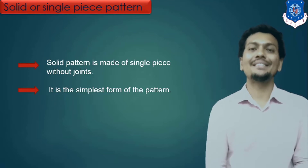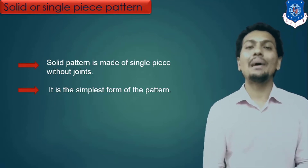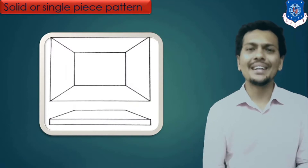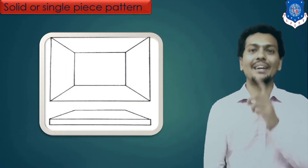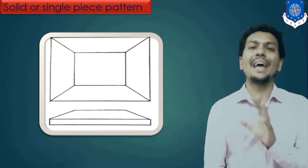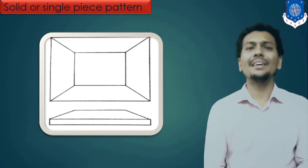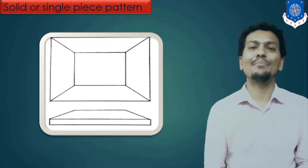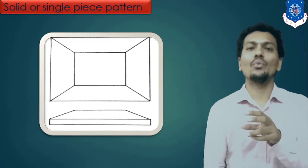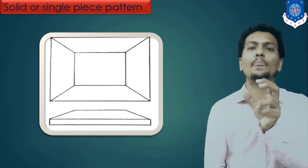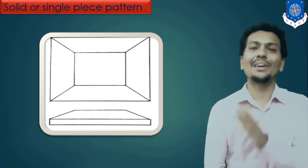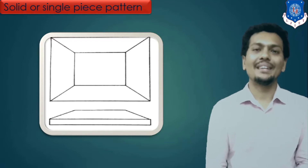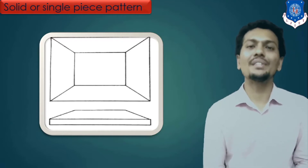So let us start discussion on different types of pattern. The first is the solid or single piece pattern. A single piece or solid pattern is nothing but a pattern which is made of any single piece. So anything — if you want to make any shape — you can make the whole shape as one piece, and that is known as a single piece or solid pattern. For example, if you want to make one small cube, you can go for a solid or single piece pattern.